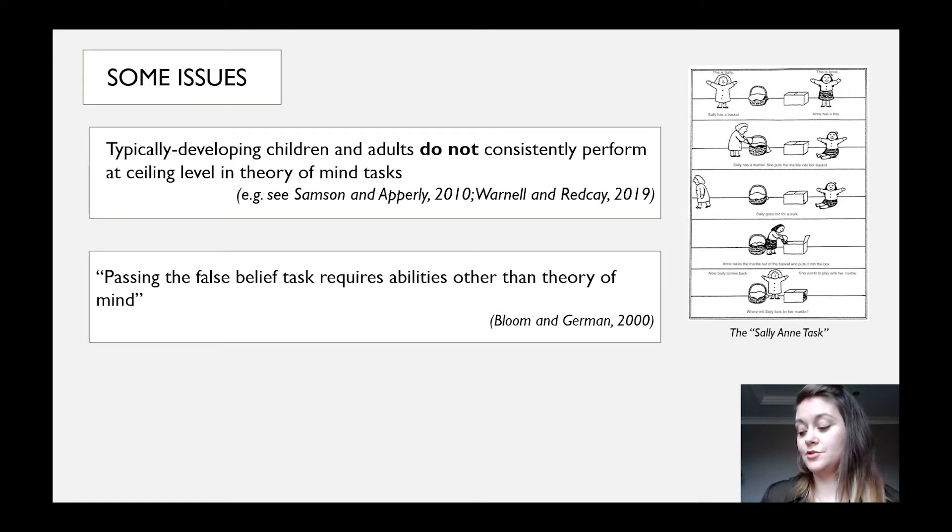Secondly, the primary research tools that this theory is based on, a false belief task known as the Sally-Anne test, has been challenged quite a lot. There's an image at the top you might recognise, where a child is asked to observe a short scene in which one character puts chocolate in a basket, then while outside a second character removes and hides the chocolate. This test has been challenged because passing requires abilities other than theory of mind, and there is more to theory of mind than is actually tested.